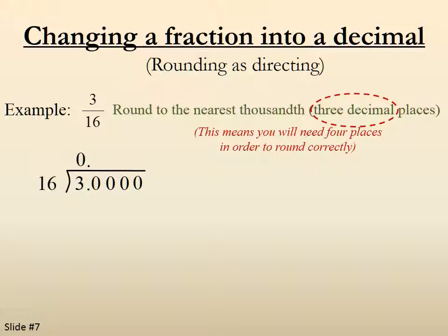16 goes into 3 no times. 16 into 30 one time. 1 times the 16 gives us 16. We subtract. We have 14. We bring down the next zero.